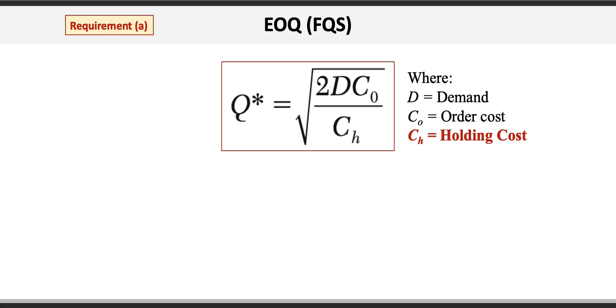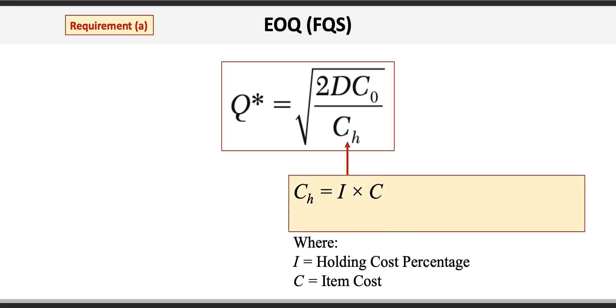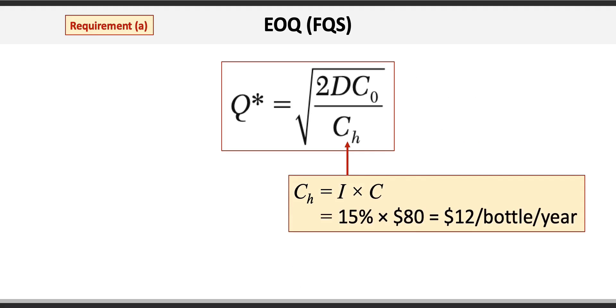The holding cost is equal to I times C, where I is 15% per year and C is the $80 item cost. Therefore C_H, the holding cost, equals 15% times $80, which equals $12 per bottle per year.